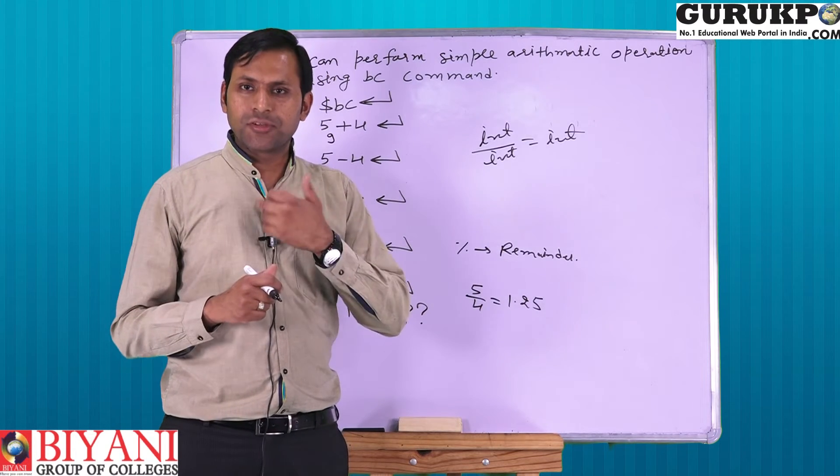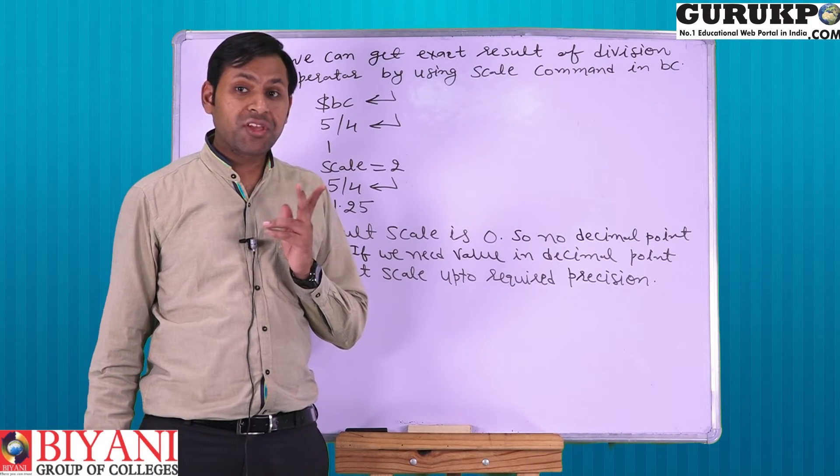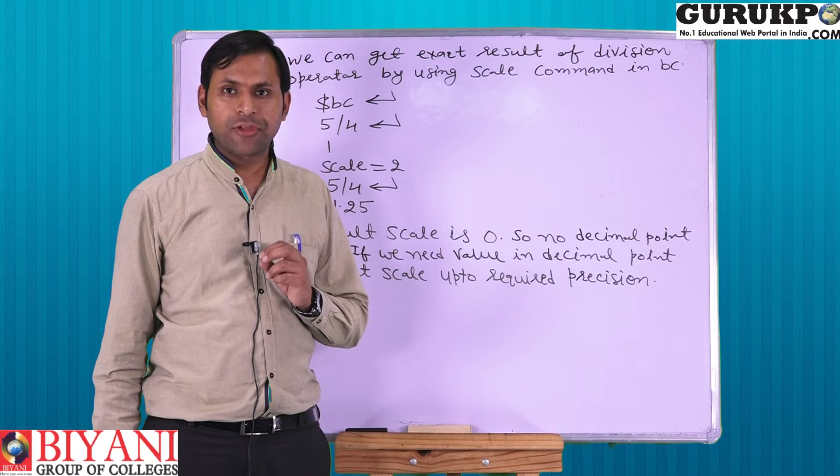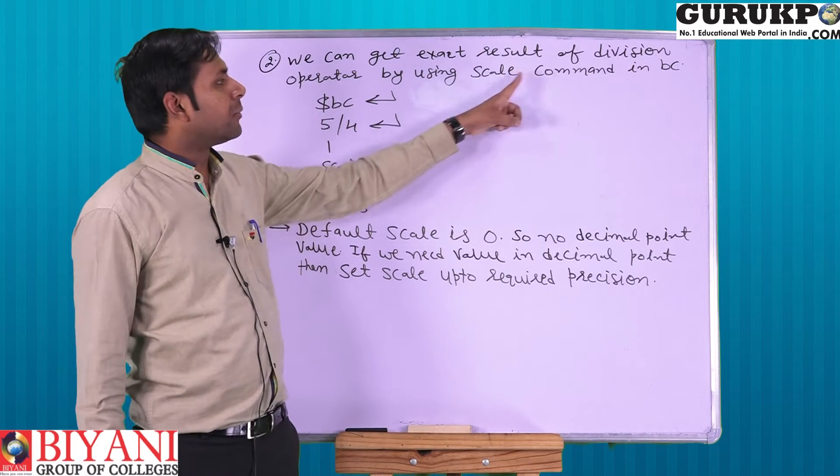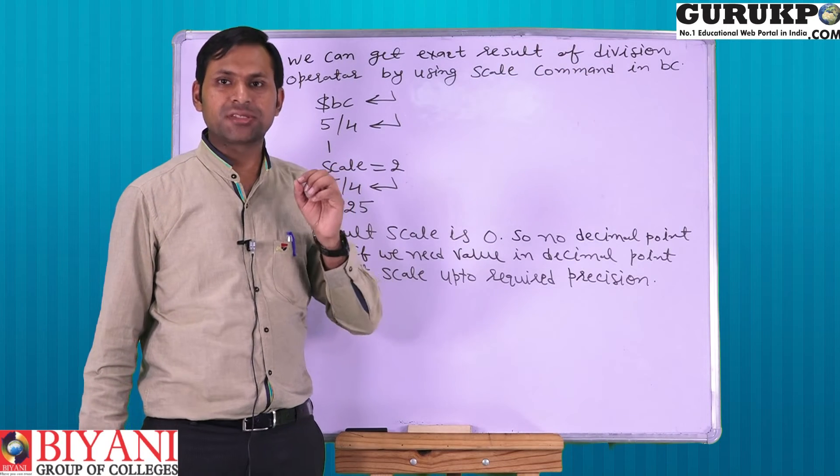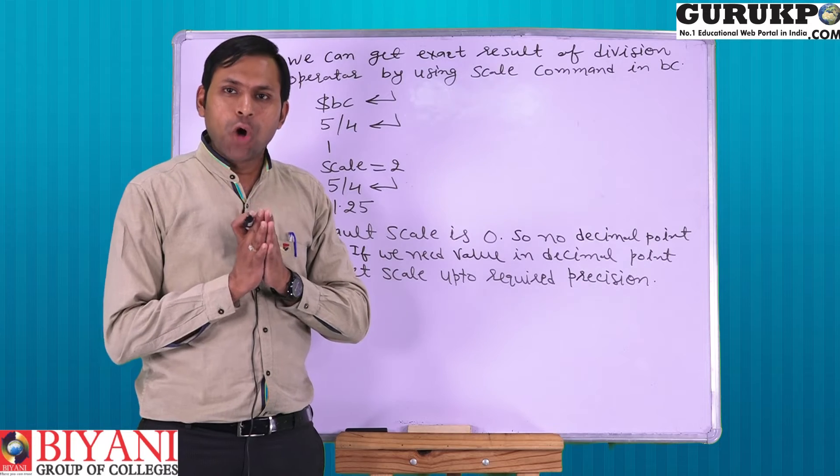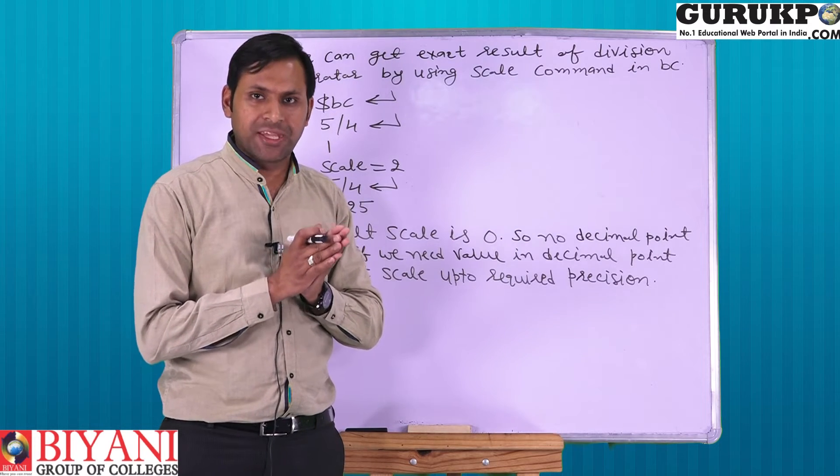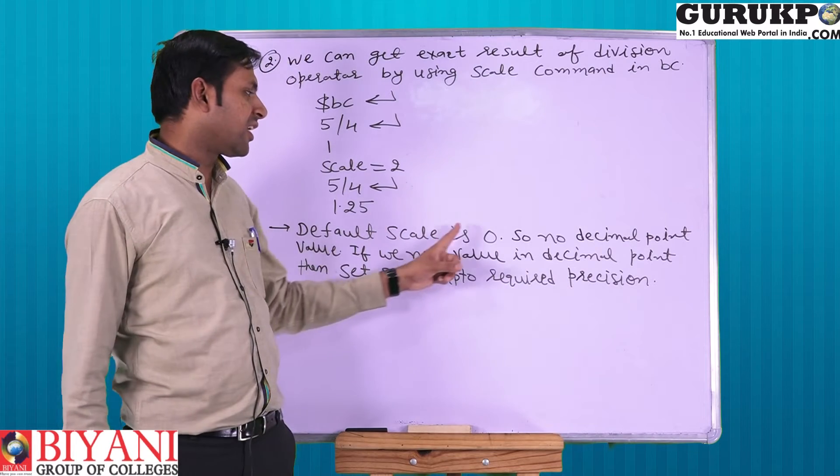How this can also be done by using BC? For this we do some other process. The process is, if we want to get exact value, then we have to use scale command in BC. BC supports scale. Scale shows how many digits we want to display after decimal point.